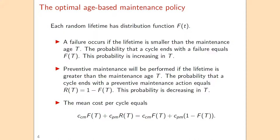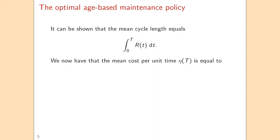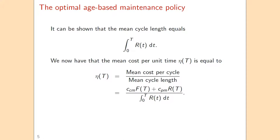Based on these two probabilities, we have the mean cost per cycle. We pay the corrective maintenance cost multiplied by the probability of failure, and the preventive maintenance cost multiplied by the probability of surviving to the maintenance age. You can also express everything in terms of the distribution function since the reliability function equals one minus the distribution function. It can be shown that the mean cycle length equals the reliability function integrated from zero to capital T.